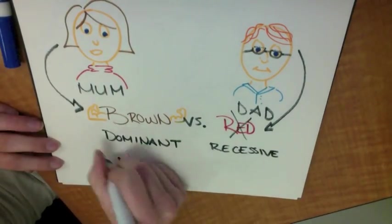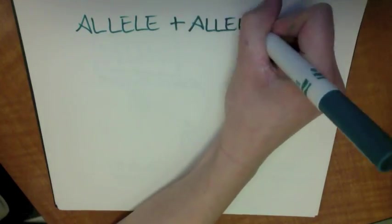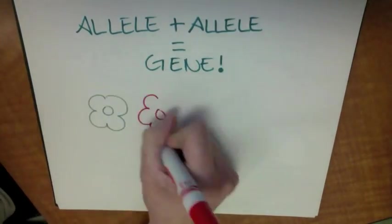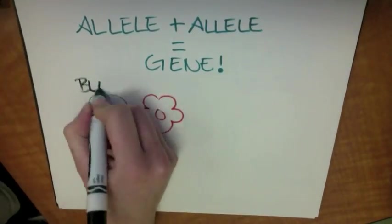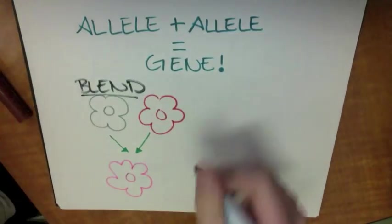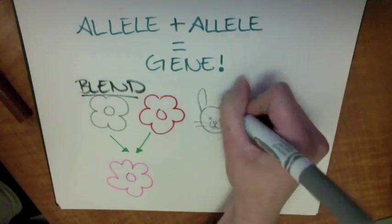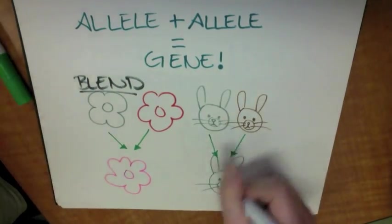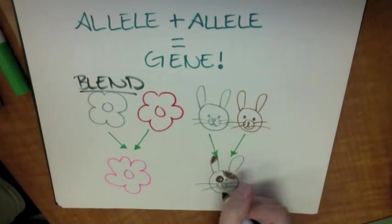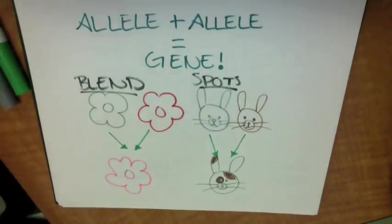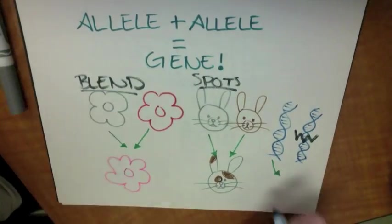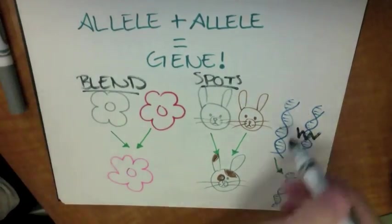You need two alleles to make up your hair color, but why do you need two? You need two alleles to make up every gene for a couple of reasons. Some alleles work together, or blend. Some genes have both show up, like spots. And some are backups, in case something goes wrong.